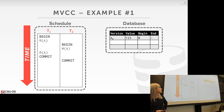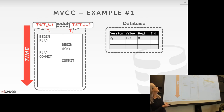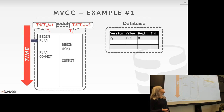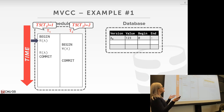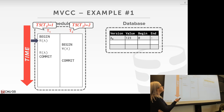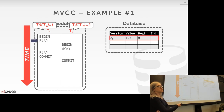When transaction T1 arrives, it's assigned a timestamp of 1. The first operation is a read on A. We consider T1's timestamp of 1, look at the table, and find which tuple is visible by checking where the timestamp falls between begin and end. The begin is 0 and end is infinity, so timestamp 1 falls between them — T1 reads version A0.